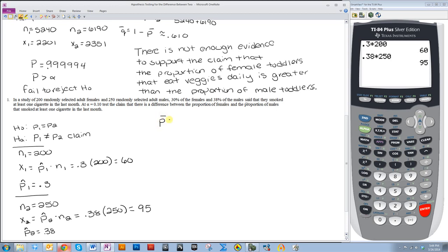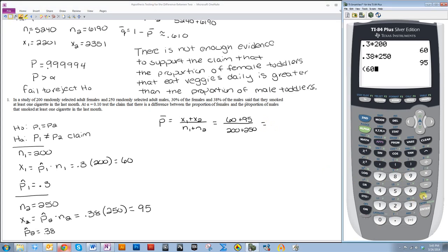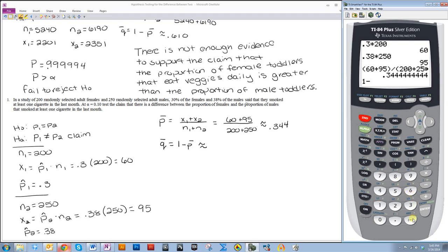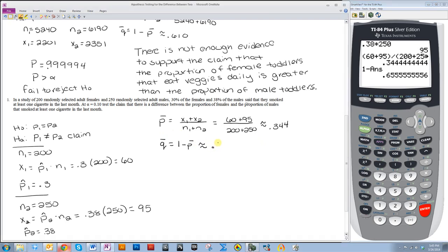So if I want to find p-bar, I do x1 plus x2 over n1 plus n2. So p-bar is 60 plus 95 over 200 plus 250, which is approximately equal to 0.344. And q-bar is equal to 1 minus p-bar, which is approximately equal to 0.656.